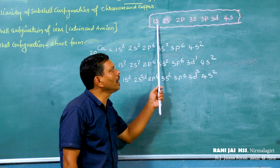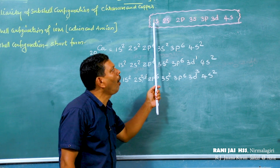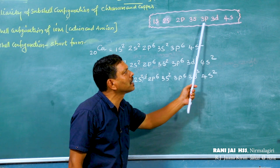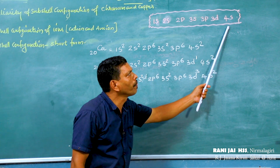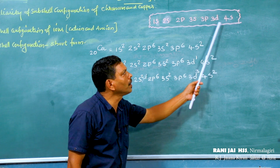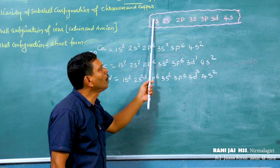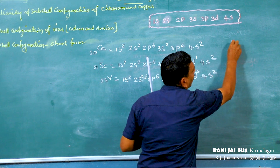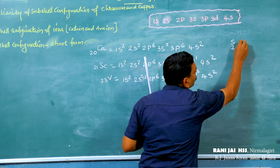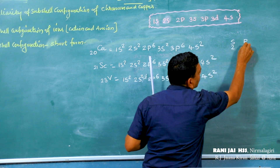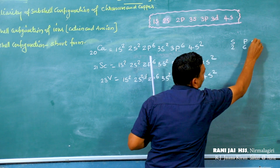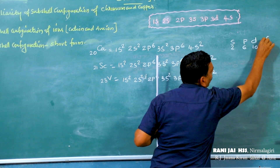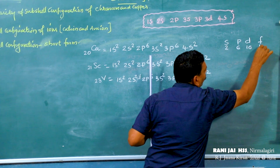The subshell electronic configuration order is correct. The maximum capacities are: s — maximum 2; p — maximum 6; d — maximum 10; f — maximum 14.